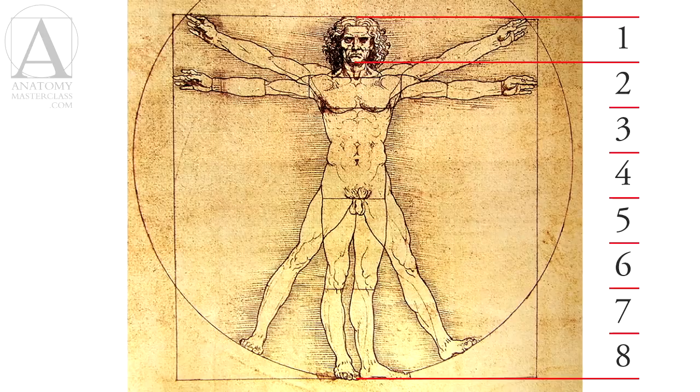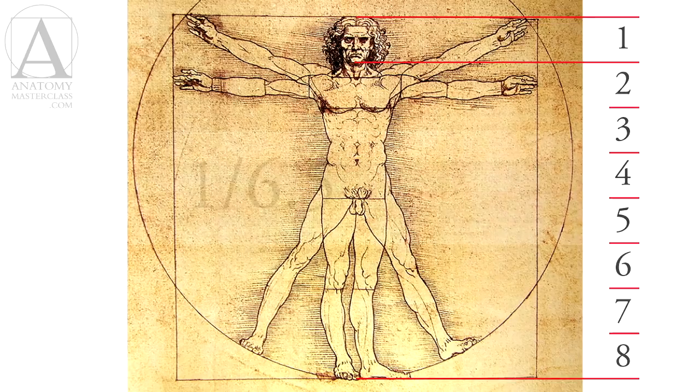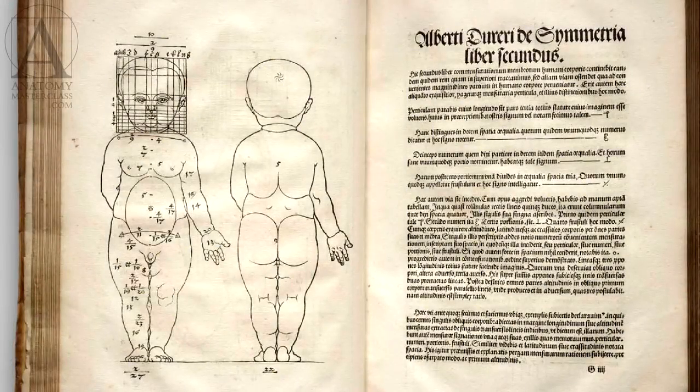Not every adult person has one-to-eight head-to-body ratio. On average, this ratio is between one-to-six-point-five and one-to-eight. Infants and children have relatively bigger heads, and as they grow, the body becomes considerably taller, while the head doesn't grow as much.